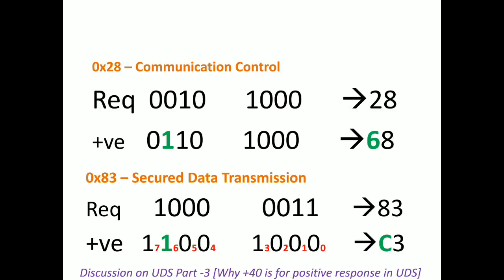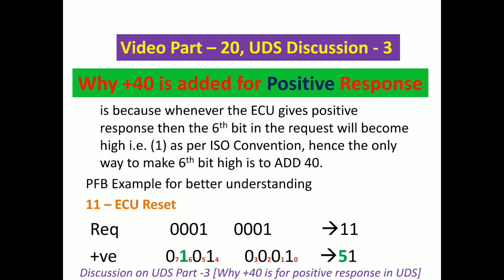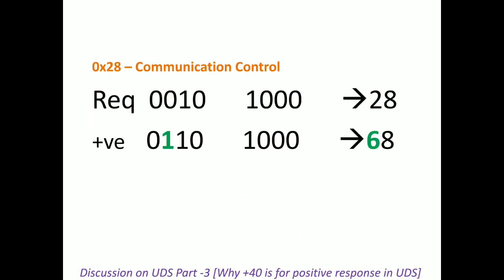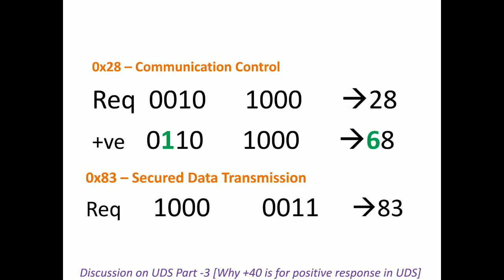Whenever there is a positive response, the 6th bit will become one — the sixth bit will become high. For ECU and test tool understanding, they have made the reference that the 6th bit should change to one. One more thing: we have only four sequences of service IDs — those starting with 1 (like 0x11), those starting with 2 (like 0x28, 0x2E, 0x27), those starting with 3 (like 0x3E), and those starting with 8 (like 0x83).